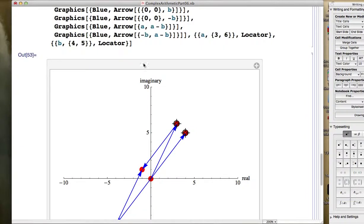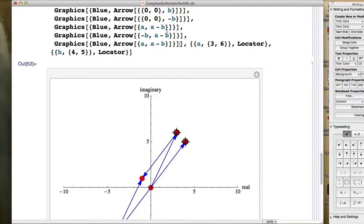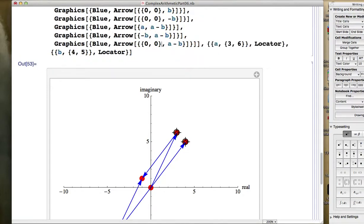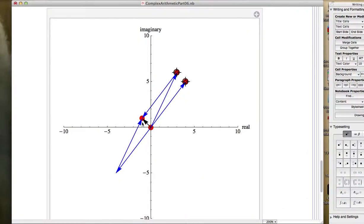Let's add an arrow that starts at negative b and ends at a minus b. And finally, let's add an arrow that starts at the origin and ends at a minus b. And let's make that one black because that is the answer. This black arrow that has a horizontal displacement of negative one and a vertical displacement of positive one is a representation of the complex number negative one plus i, as well as this red dot representing that same complex number.